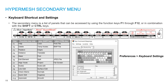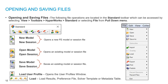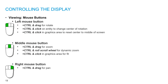HyperMesh has keyboard shortcuts — F1 through F12 options. These are default shortcuts, but you can customize them through Preferences and Keyboard Settings. For display controls using the mouse: Control plus left button to rotate the model, Control plus middle mouse button to zoom in and zoom out, and Control plus right click to pan the model.